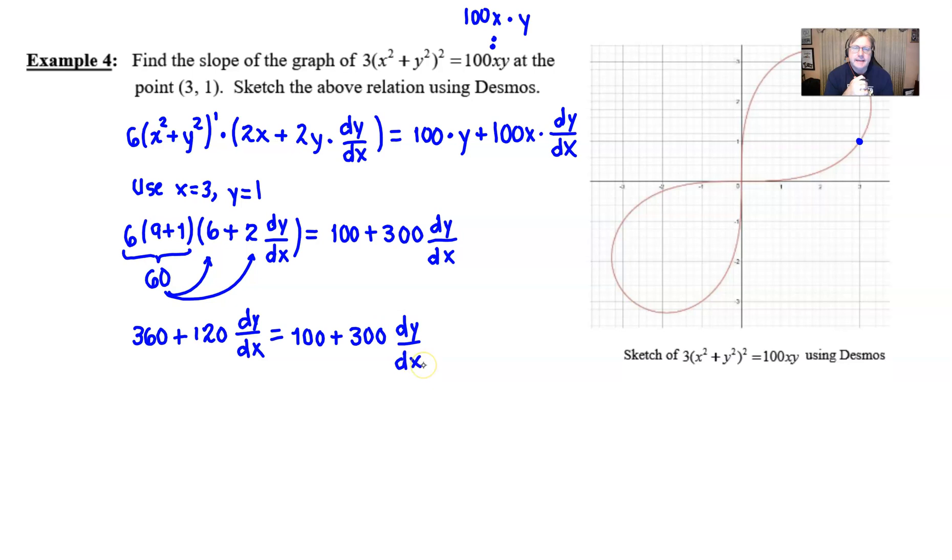So we're getting ever so closer to having our dy/dx isolated. You can move the dy/dx term to either side it really makes no difference. If I choose to move it to the left side I would have a negative in front of it. If you're okay with that we can do that. Subtract 300 over from 120 and that would be negative 180 and if you subtract 360 over from 100 you would get negative 260. Either way works. Those two negatives are going to cancel out here in just a moment anyway and then we're finally going to get essentially 260 over 180.